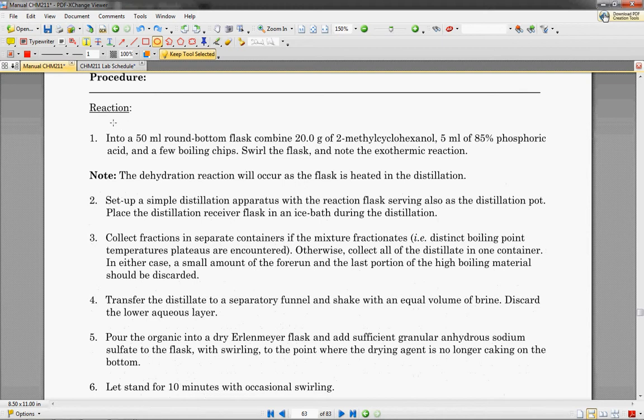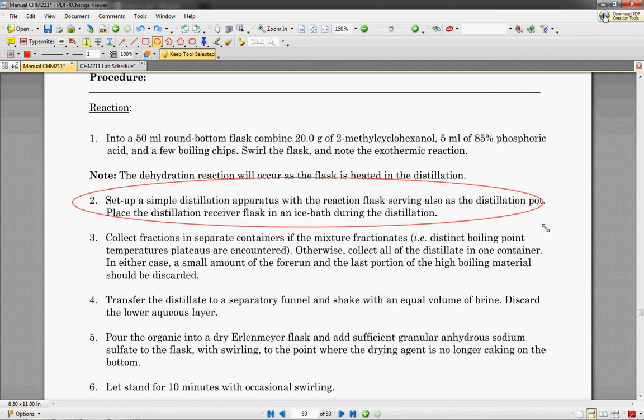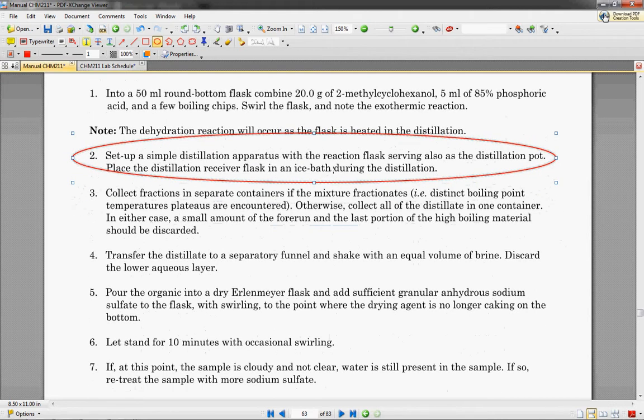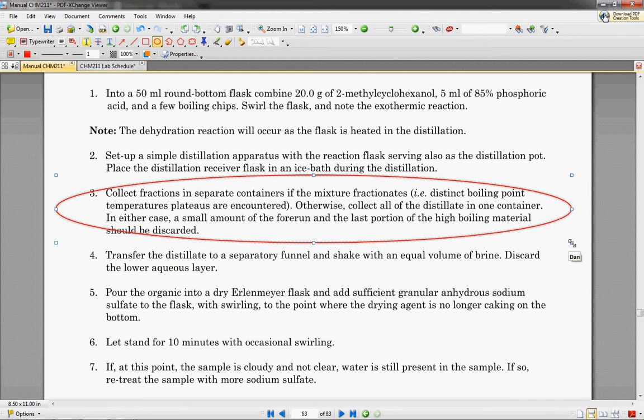What are we actually going to do? In a 50-milliliter round-bottom flask, we're going to combine some of that methylcyclohexanol molecule with some phosphoric acid and boiling chips. We're going to set up a little distillation, and that's going to be similar to a couple weeks ago when we did distillation. We're essentially going to collect fractions in a separate container if the mixture fractionates. If you remember from the distillation lab, fractionates means they have completely distinct boiling points, and usually you hit a plateau as you're boiling that specific molecule off.